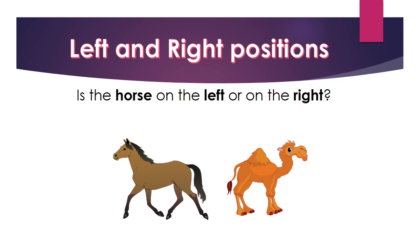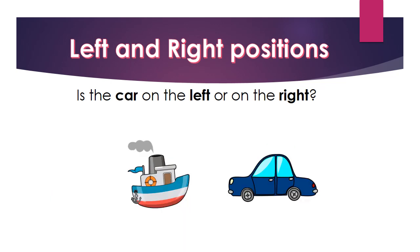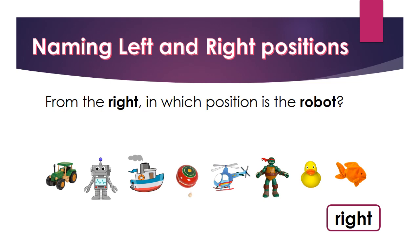Is the horse on the left or on the right? The horse is on the left. The camel is on the right. Is the car on the left or on the right? The car is on the right. The sheep is on the left.